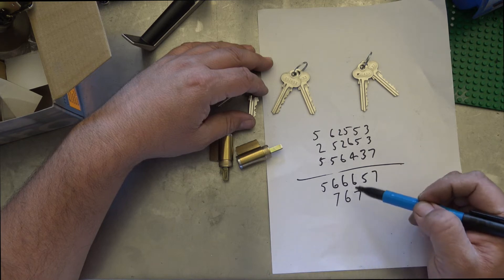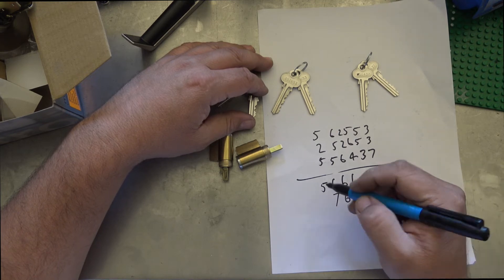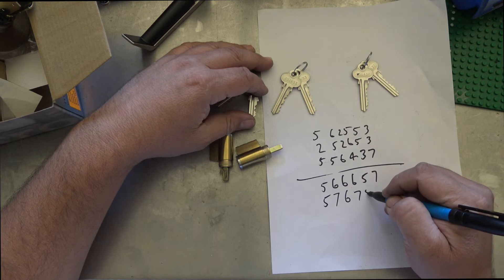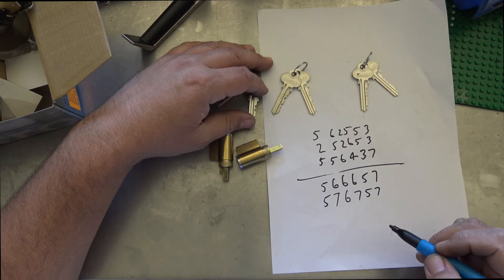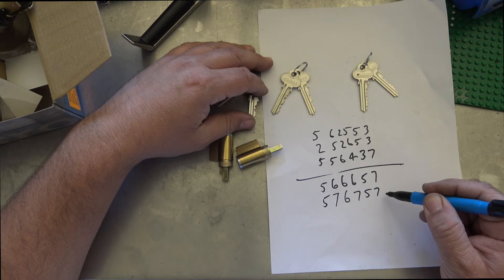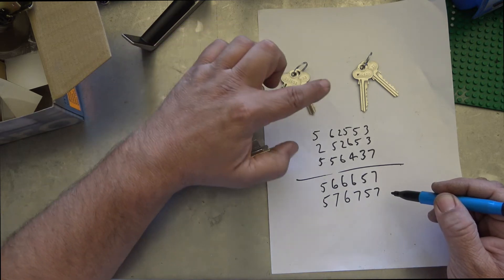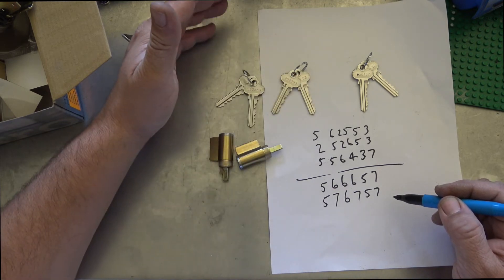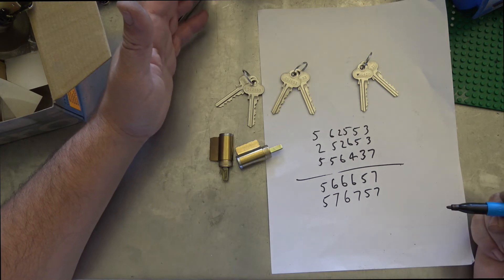That will make it high low high low, 5 7. Okay, so that's a little bit better of a combination. So we're going to recut that key to code and then duplicate that same code to all of these keys here, reusing the original key so we're not paying anything in key blanks.